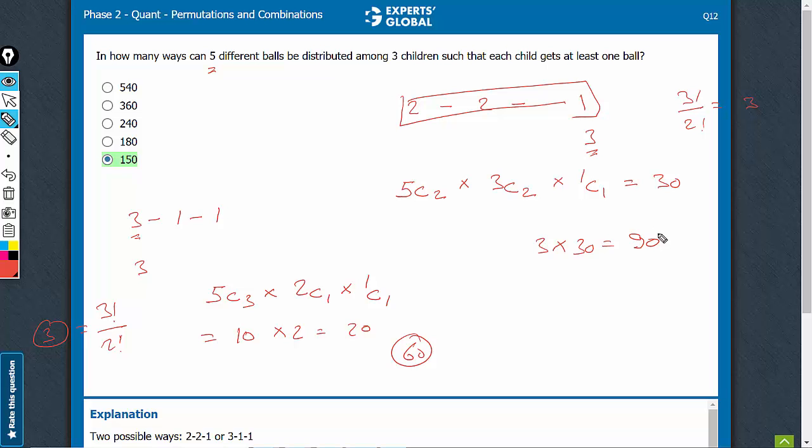So, total 3 into 20, 60 ways. So, 90 and 60. Total is 150 ways.